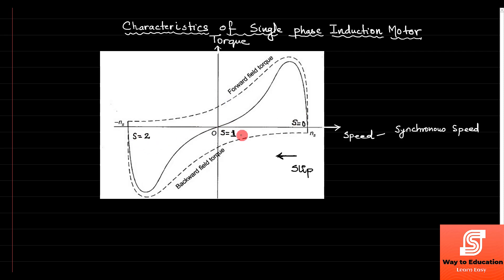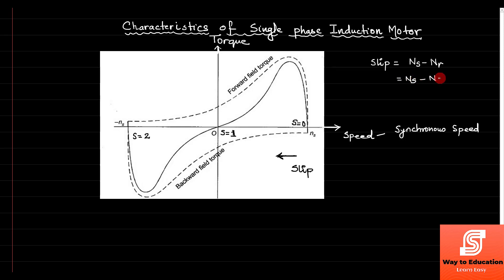Slip was defined in the previous lecture. Slip is basically the difference of speed between the rotor and the synchronous speed. So slip is defined as Ns minus Nr. If we look at this point where slip value is zero, that is because Nr is also equal to Ns at that point. So for this point the slip value is equal to zero, meaning the starting torque is also zero.